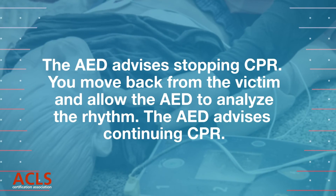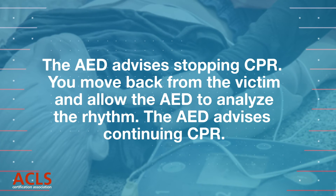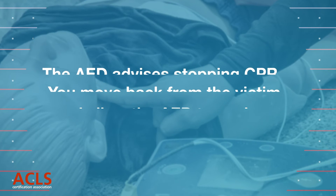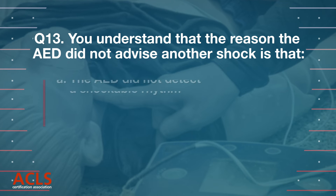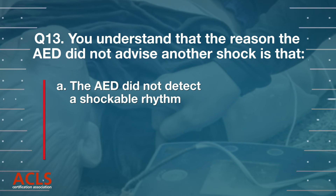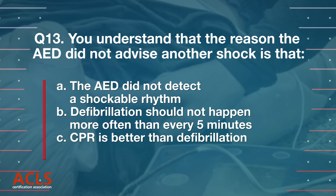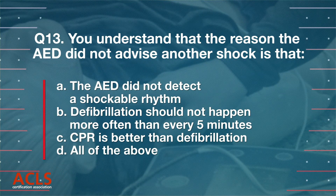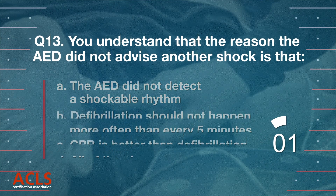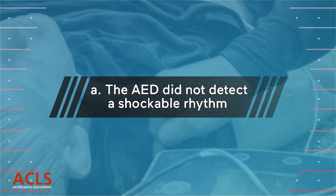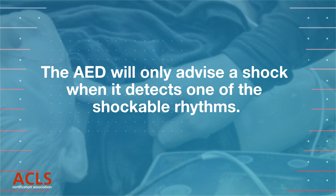The AED advises stopping CPR. You move back from the victim and allow the AED to analyze the rhythm. The AED advises continuing CPR. Question 13: you understand that the reason the AED did not advise another shock is that — A) the AED did not detect a shockable rhythm, B) defibrillation should not happen more often than every five minutes, C) CPR is better than defibrillation, D) all of the above. Correct answer: A, the AED did not detect a shockable rhythm. The AED will only advise a shock when it detects one of the shockable rhythms.